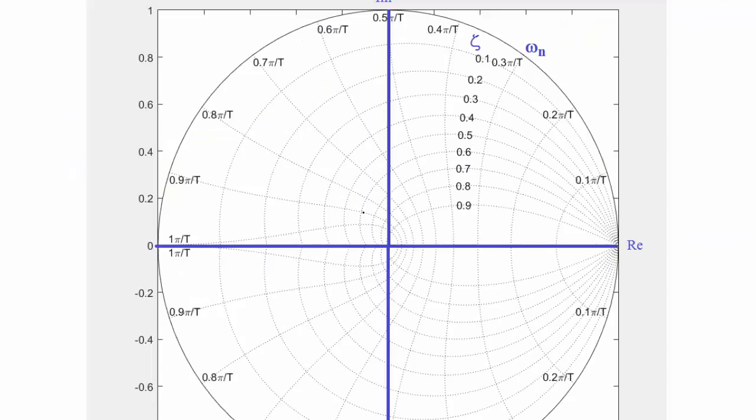First we have a chart here that has constant damping ratio curves and constant natural frequency curves. If we want to design for 0.15 pi over t, we know that's got to be somewhere in between the 0.2 pi over t and 0.1 pi over t curves, so we're going to estimate it about right here. And we have a constant damping ratio of zeta equal to 0.07 and that's this curve here. So the intersection of those two lines gives us our desired closed loop pole.